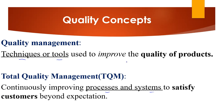With quality management, the focus is on the quality of products, whereas with total quality management, the focus is on customer satisfaction. So for exam questions: it's quality management if we are improving the quality of the product, but it's total quality management if we are improving the satisfaction of customers beyond expectation.